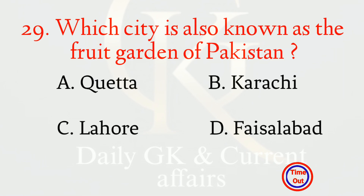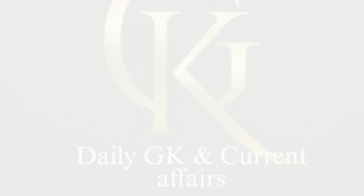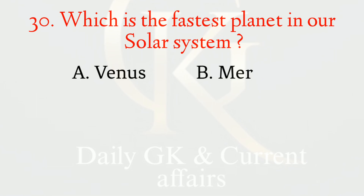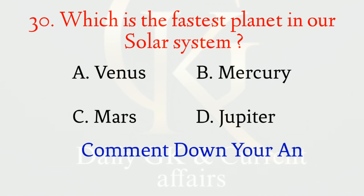Which city is also known as the fruit garden of Pakistan? The correct option is A: Quetta. For the next question about the first comet planted in the solar system, please comment your answer and your score in the comment section.